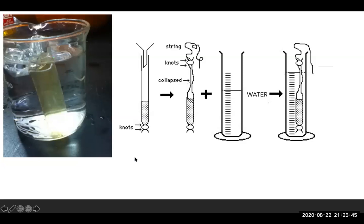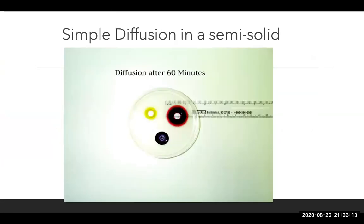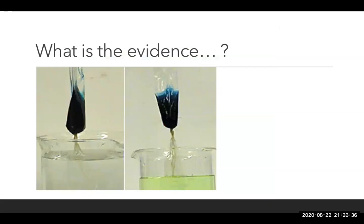In the dialysis tubing procedure, we tie off dialysis bags and put a hypertonic or hypotonic solution into the bag, then place it into a graduated cylinder with distilled water. We can see if the bag gained or lost water by weighing it, depending on which way water would osmose. This is a pretty fun experiment.